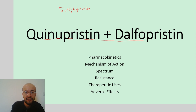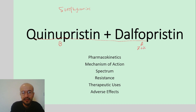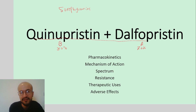These drugs are usually combined in a mixture of streptogramin A, which is dalfopristin, and streptogramin B, which is quinupristin. The mixture is usually 70% streptogramin A (dalfopristin) and 30% streptogramin B (quinupristin). These antibiotics are of high cost.